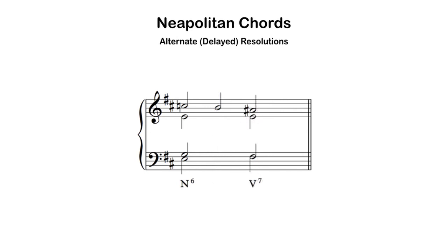Another option — a little more chromatic — is to harmonize that same B natural using a secondary leading tone chord, typically a vii°7 of V. If you need more information about secondary leading tone chords, I have a video about that on my YouTube channel.